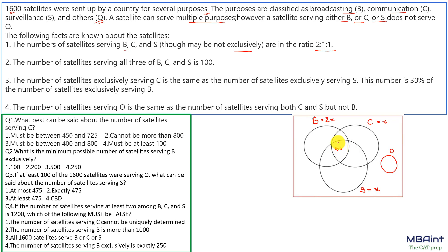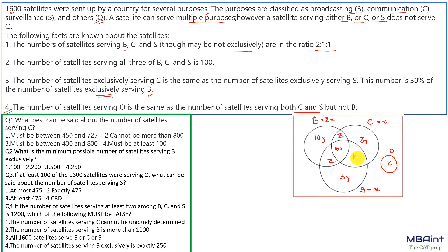So the value at the center (all three) would be 100. The number of satellites exclusively serving C is the same as the number exclusively serving S, and this is 30% of the number serving B. So if B's exclusive region is 10y, then C's and S's exclusive regions would each be 3y. Now looking at the C and S circles — they have equal total values, equal exclusive regions, so the overlap regions between B–C and B–S are also equal; let's name them Z and Z. The number of satellites serving O equals the number serving both C and S but not B, so if O = K, then that region is also K.